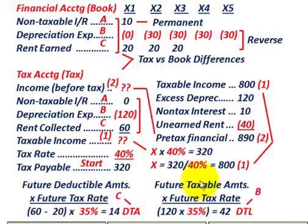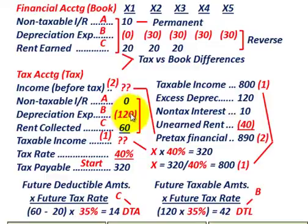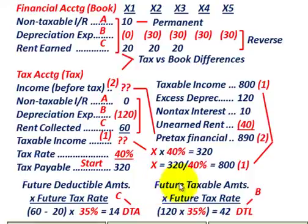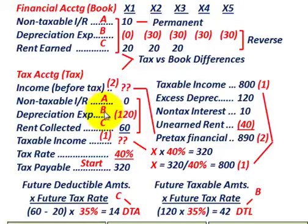Now let's look at our future taxable amount — that's the extra depreciation expense for tax purposes over financial accounting, which creates a future taxable amount. We recognized the whole $120,000 in the first year for tax, but in the next years we can only deduct it for financial accounting at $30,000 per year for the next four years. So the future taxable amount of $120,000 times the future tax rate of 35% gives us a deferred tax liability of $42,000.